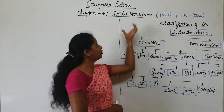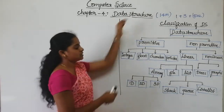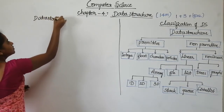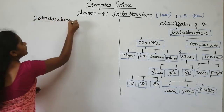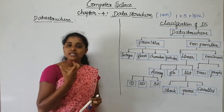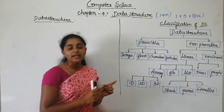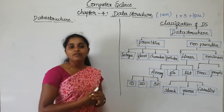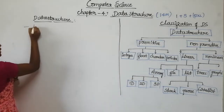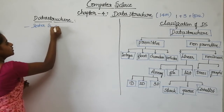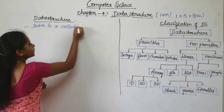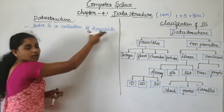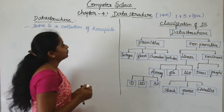Let me start to discuss about this chapter — Data Structure. Here in the data structure, first we want to know about what is data. The data is a raw fact, or a collection of raw facts, that can be calculated and manipulated by our computer system.